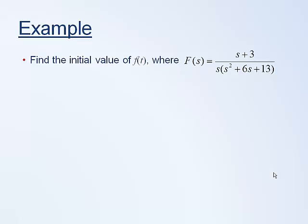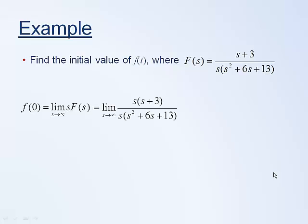So let's go ahead and do an example. First, we want to find the initial value of f(t) where we're given the Laplace function F(s). And so obviously, in order to determine the initial value, we can use the initial value theorem. If you look back on the previous slide, the initial value theorem gave us that f(0) is equal to the limit as s approaches infinity of s times F(s). So we're given F(s) there. We can just substitute that straight into our limit.